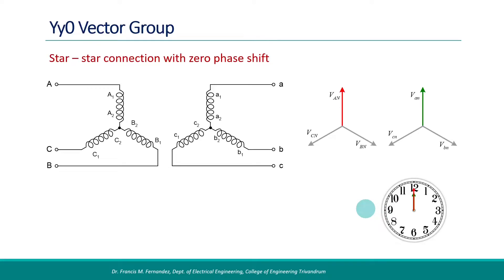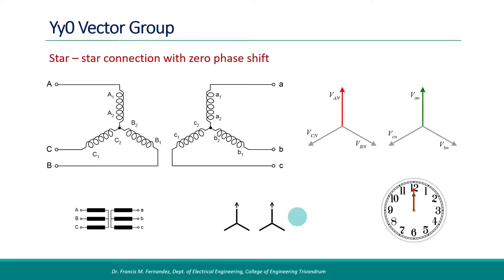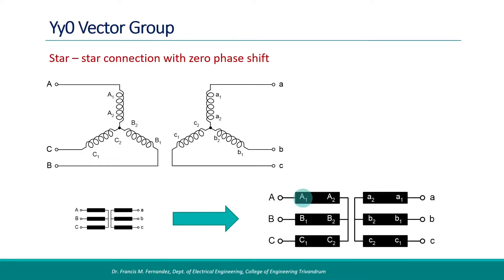We can have a simplified connection diagram, which will normally be printed on the transformer nameplate, and also a displacement diagram showing the connections on the two windings and the phase difference between them. In the simplified connection diagram, the polarities of each winding are represented with A1, B1, C1 on the left side for the primary, and A1, B1, C1 on the right side for the secondary. Primary terminals are represented with uppercase letters A, B and C, and secondary terminals with lowercase letters A, B and C. We shall follow this convention throughout this video.